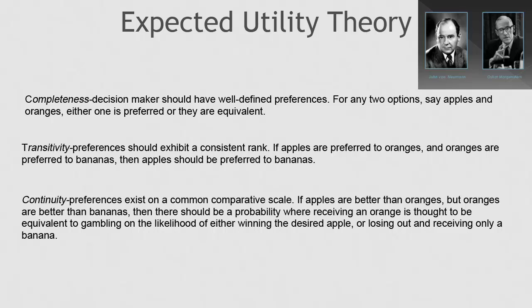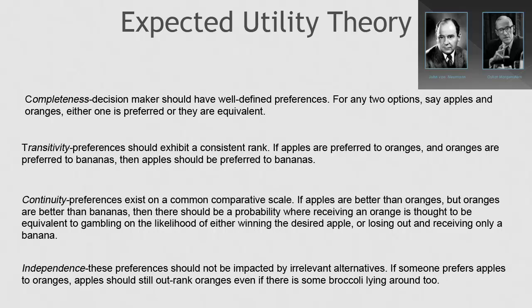Third, these preferences exist on a common comparative scale. That's the continuity axiom. If apples are better than oranges, but oranges are better than bananas, then there should be a probability where receiving an orange is thought to be equivalent to a gamble on the likelihood of either winning the desired apple or losing and receiving only a banana.